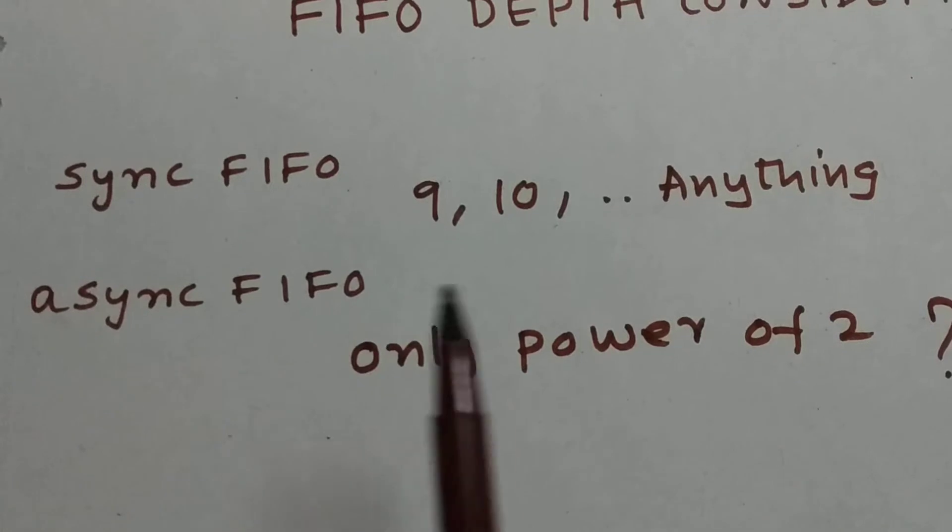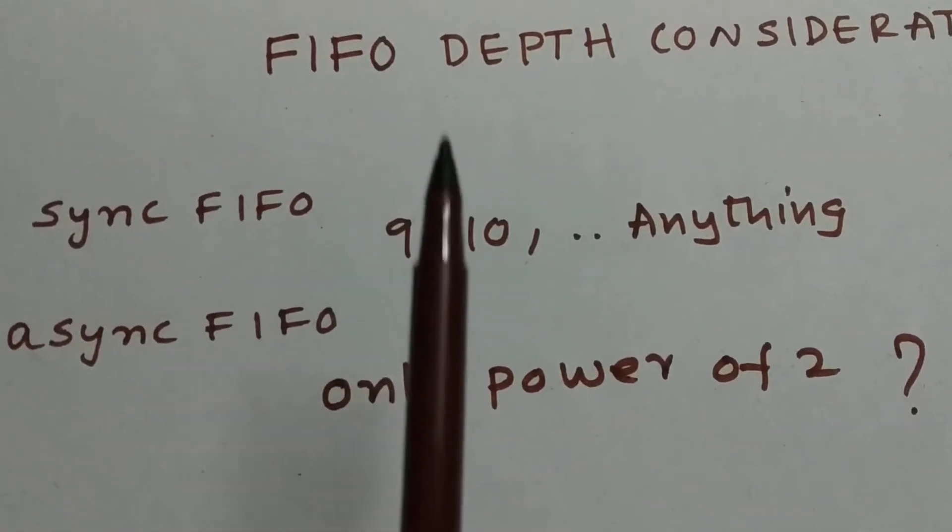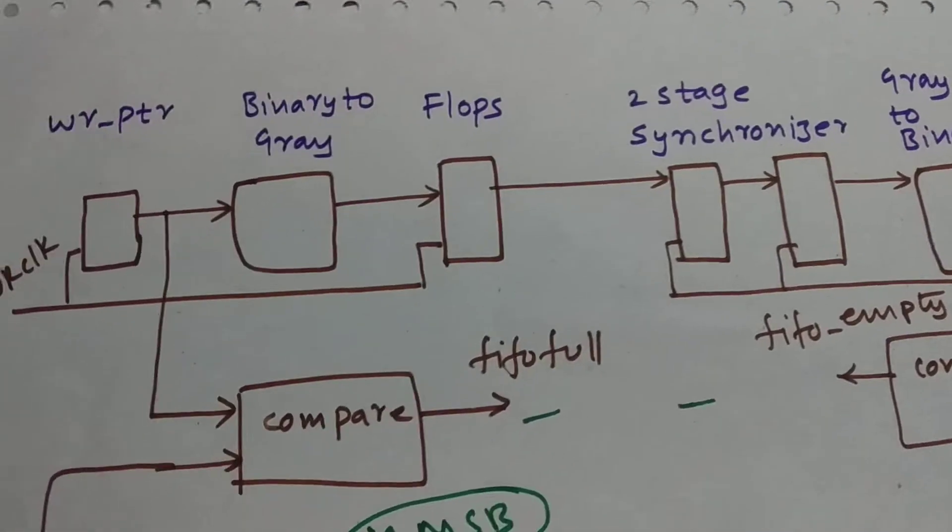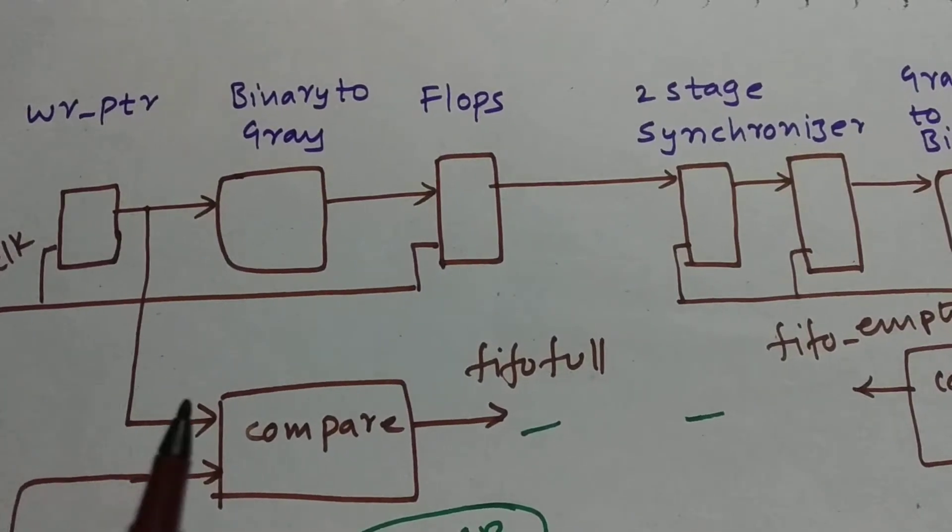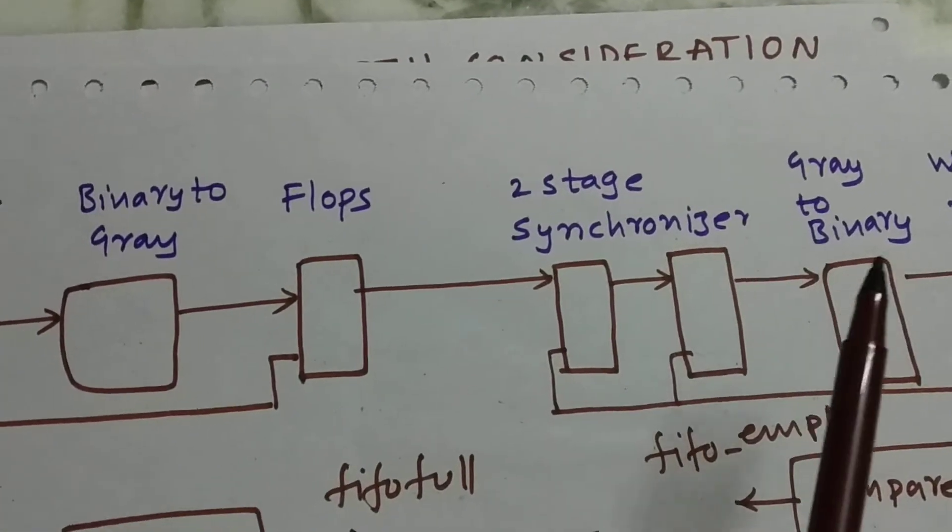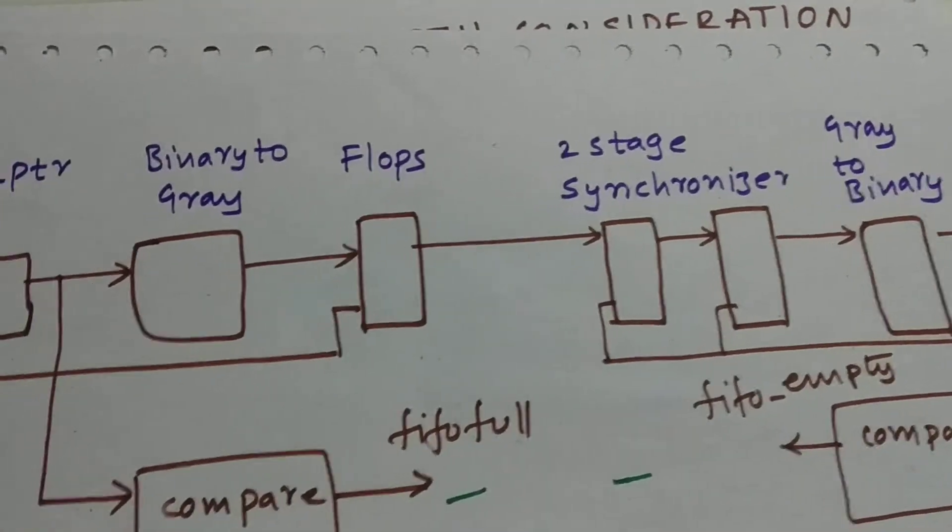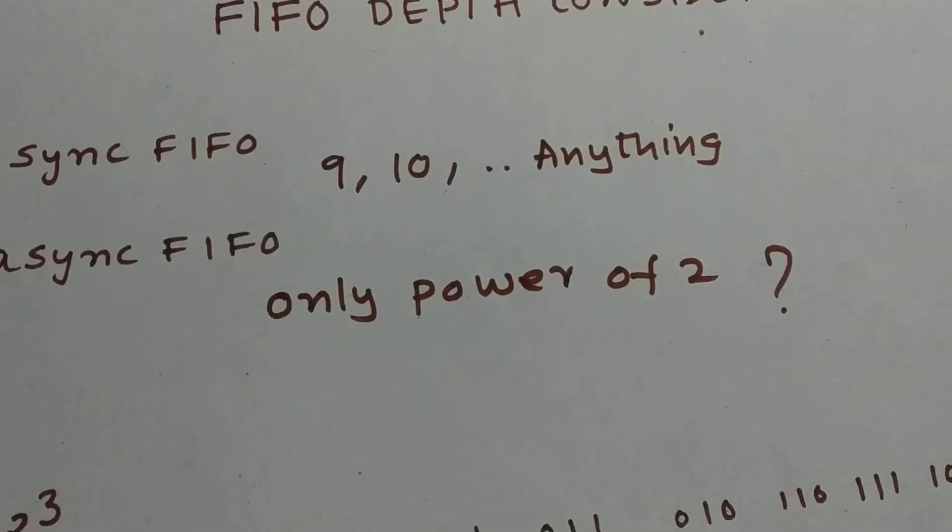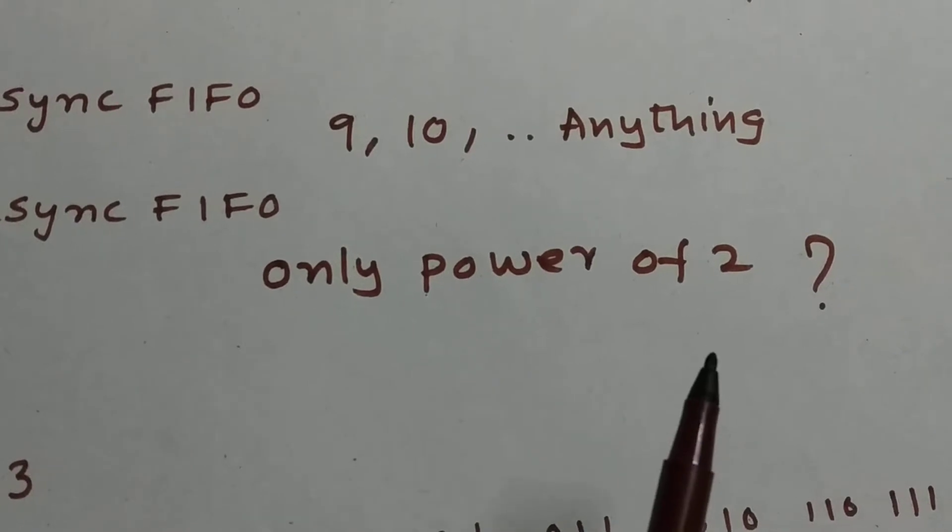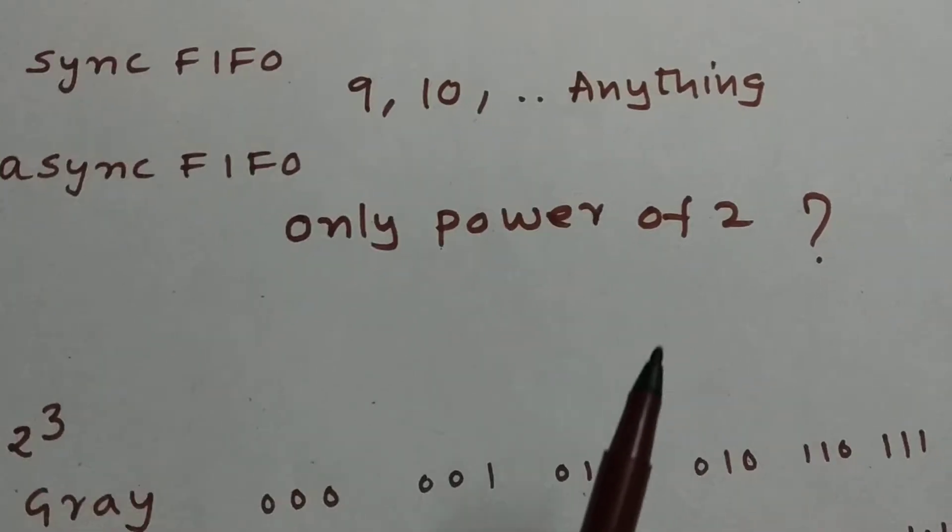Asynchronous FIFO can have a FIFO depth of only power of 2. Why only power of 2? As we know that in asynchronous FIFO we use binary to gray and gray to binary conversions. That's the main reason we need to have only power of 2. Why only power of 2? We will look into depth.